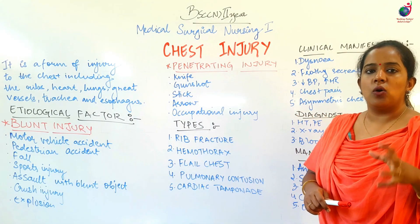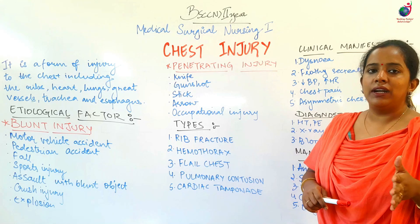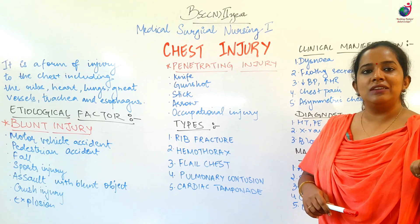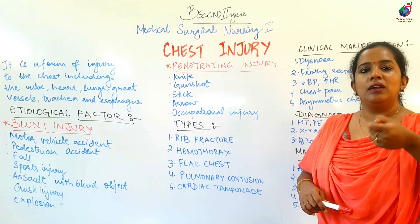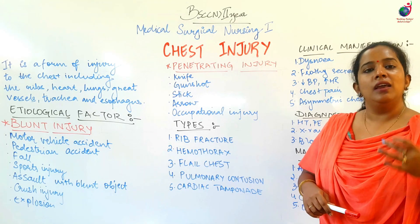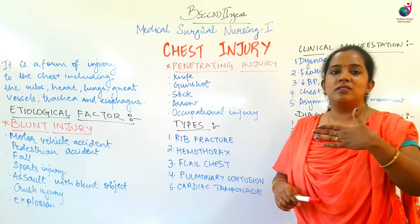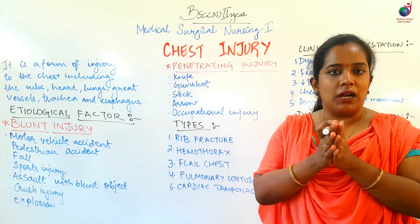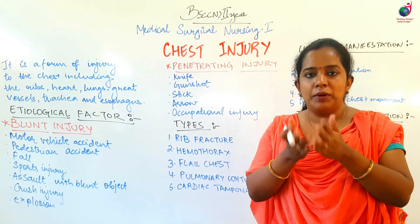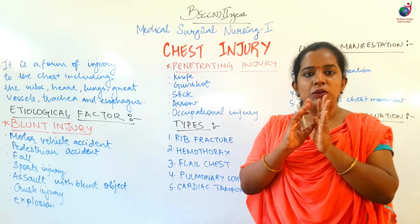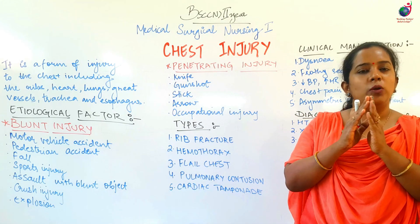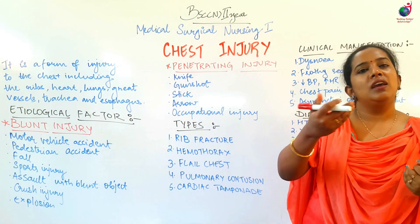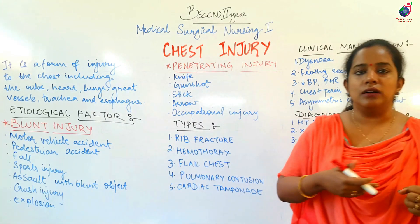Chest injury ke reasons ya causes ko hum do mein divide karte hain: blunt injuries aur penetrating injuries. Blunt injuries ka matlab hai ki koi bhi cheez skin ko kaate bina, baahir se force lagao, jis ki wajah se pressure ya force se ek injury create hoti hai — that is blunt, jo sharp nahi hota. Penetrating ka matlab hai koi bhi sharp equipment ya sharp substance jo external area se force ke saath chest cavity ke under insert hoti hai.